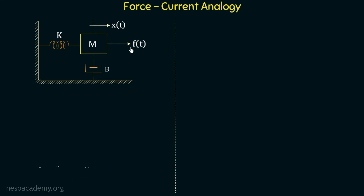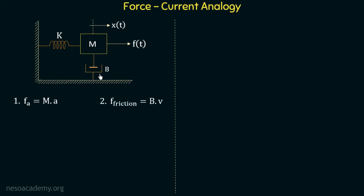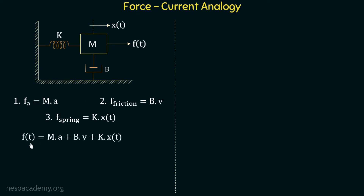The applied force is F and there are three opposing forces. The first force is the force due to acceleration, which is M multiplied with A. The second force is the force due to friction, which is equal to b multiplied with v. The third force is the restoring force of the spring, which is equal to k multiplied with x(t). Applying Newton's law of motion, the sum of all applied forces equals the sum of all opposing forces.